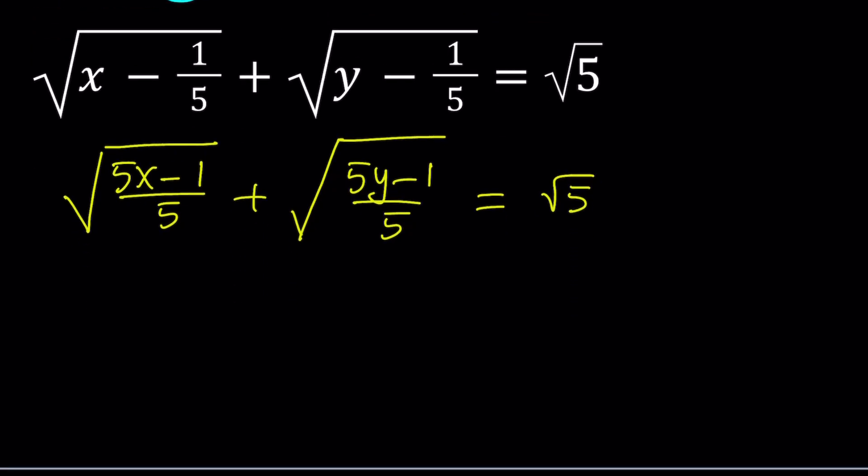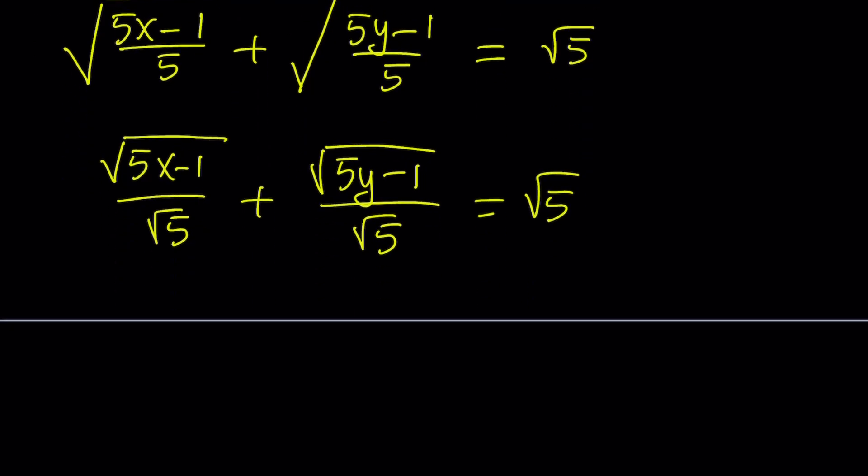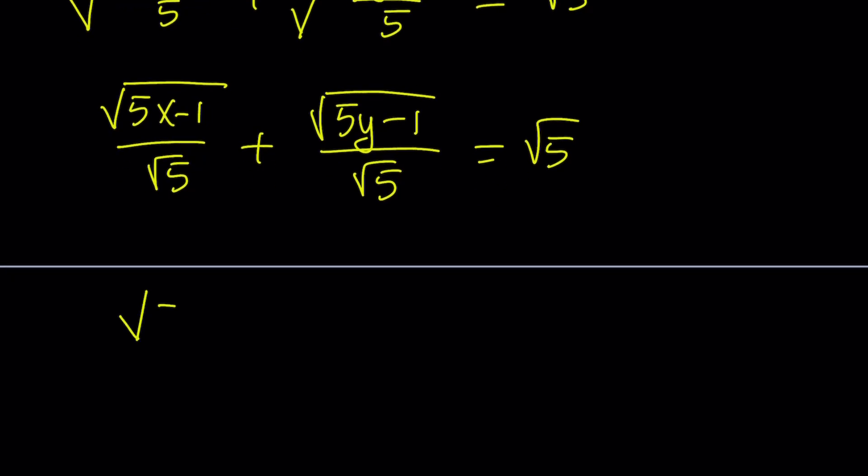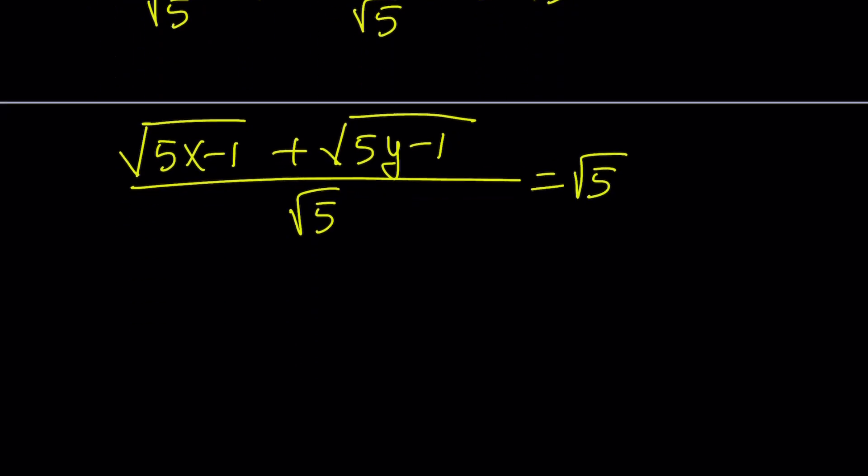Notice that we have the square root of a quotient, so we can basically write it as a quotient of two square roots. In other words, we can write this as square root of 5x minus 1 divided by square root of 5 plus the square root of 5y minus 1 divided by the square root of 5. And that is equal to square root of 5. Now, since we have two fractions with the same denominator and they're being added, we can just add the numerators.